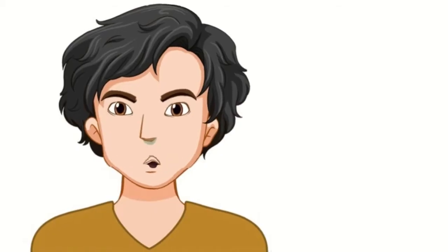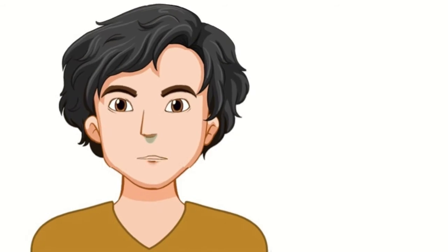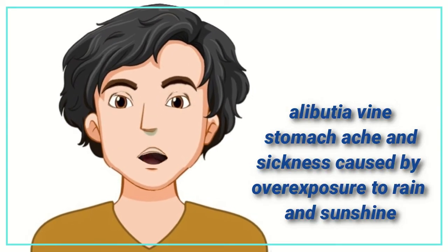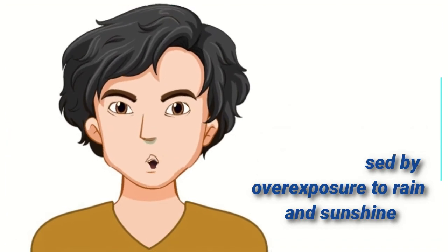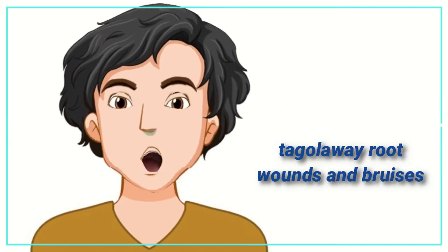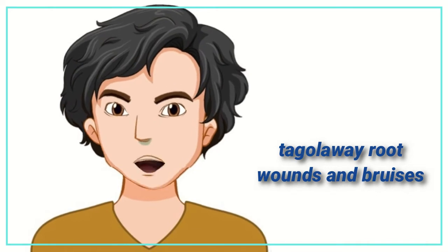Their traditional medicine include alabushia vine to cure stomach ache and any sickness caused by overexposure to rain and sunshine. Powdered Takola Wairud is applied to wounds and bruises.